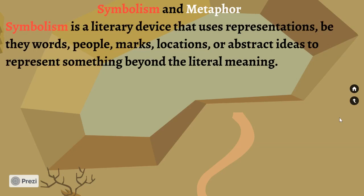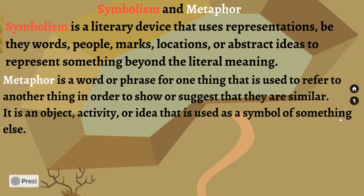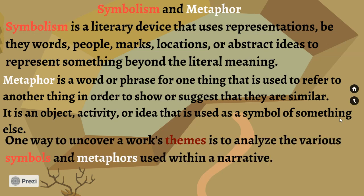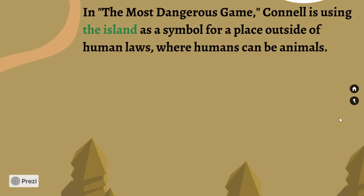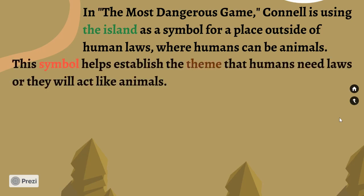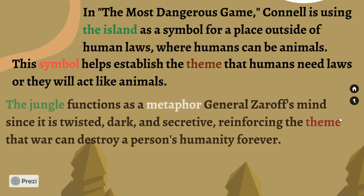We also have to think about symbolism and metaphor. Symbolism is a literary device that uses representations — words, people, marks, locations, abstract ideas — to represent something beyond the literal meaning. A metaphor is a word or phrase for one thing used to refer to another thing to show they're similar; it's an object, activity, or idea used as a symbol of something else. One way to uncover a work's theme is to analyze the various symbols and metaphors. In 'The Most Dangerous Game,' Connell uses the island as a symbol for a place outside of human laws where humans can be animals. This symbol helps establish the theme that humans need laws or they will act like animals.